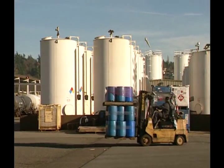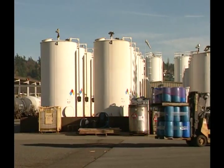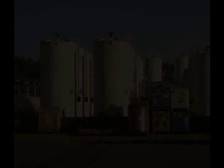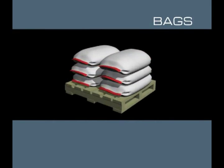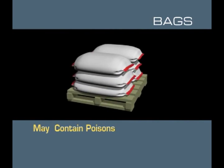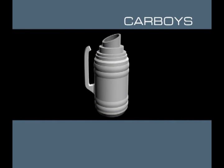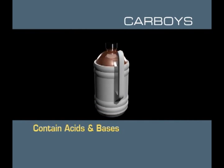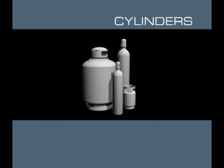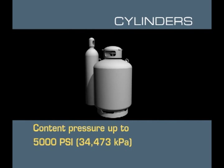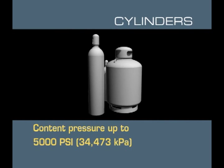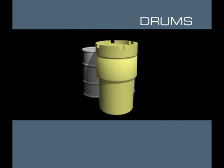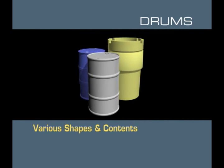The fourth type of container is often called non-bulk packages. These include bags that carry anything from food items to poisons; carboys used to protect glass bottles that hold acids and bases; cylinders that can hold materials up to 5,000 PSI or 34,473 kilopascals; and drums that contain a wide range of materials and come in many shapes and sizes.